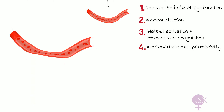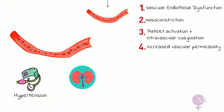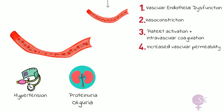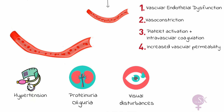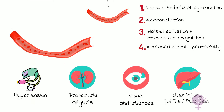Endothelial cell dysfunction results in vasoconstriction of the blood vessels, limiting blood flow to several organs. Vasoconstriction increases blood pressure, resulting in hypertension. Limited blood flow to the kidneys may damage the glomeruli, resulting in oliguria and proteinuria — one of the defining features of preeclampsia — and raised urea and creatinine. Limited blood flow to the retina may cause blurred vision, and limited blood flow to the liver may result in liver failure or rupture, presenting with epigastric or right upper quadrant pain and deranged LFTs.